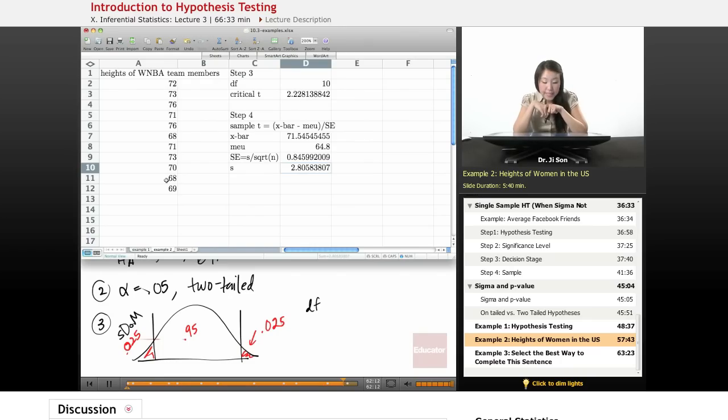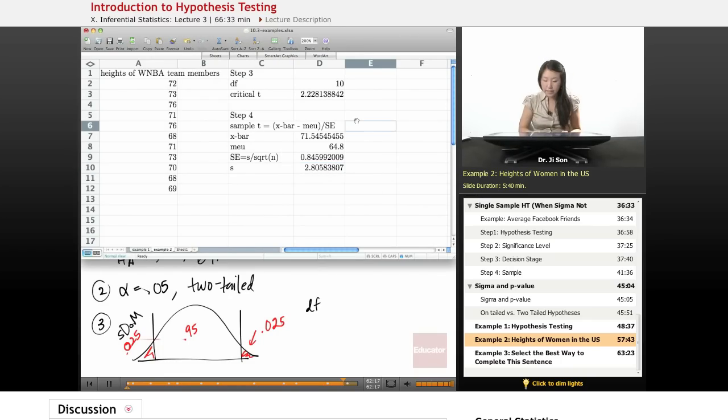So that's my standard error. And once I have all of these ingredients, now I could assemble my t, which is x-bar minus mu divided by standard error. And I get 7.97. So that's way higher than 2.2. So I'm pretty sure I can, step five, reject the null.